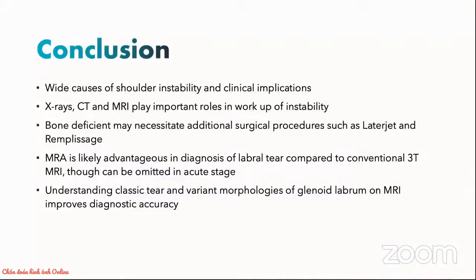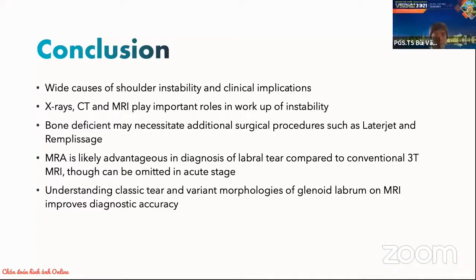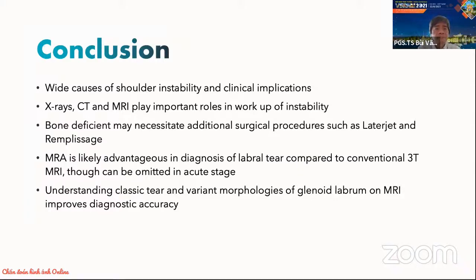We have come to the end of this presentation. To summarize: there are wide causes of shoulder instability with varied clinical complications. X-rays, CT and MRI play key roles in the workup of shoulder instability. Bone deficiency may necessitate additional surgical procedures such as Latarjet and Bristow procedures. MRI arthrography is likely advantageous in the diagnosis of labral tear compared to conventional MRI, though it can be omitted in the acute post-dislocation phase. Understanding classical tear and variant morphologies of the glenoid labrum on MRI improves diagnostic accuracy.